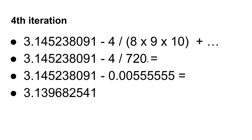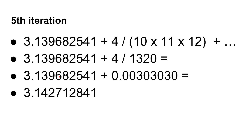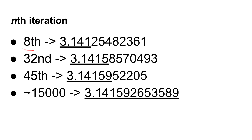In the fourth iteration, it's four over 720, which is 0.00555 recurring, which now takes us down to just below 3.14. Then in the fifth iteration, we've got four over 1,320, which gives us 0.003030, putting us at 3.142. So we can see that after five iterations we're starting to get a familiar number. After eight iterations you'll get 3.141 — a pretty good number. After 32 iterations we've got 3.1415. After 45 iterations we've got 3.14159. And if you use 15,000 terms in this infinite series, you'll get 3.141592653589 — that's 12 decimal places.